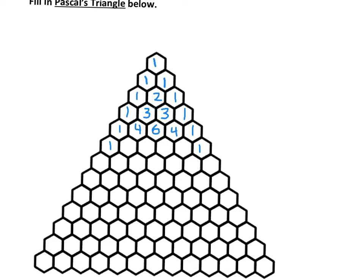1 plus 4 is 5. 4 plus 6 is 10. 6 plus 4 is 10. 4 plus 1 is 5. We won't fill in this whole thing, let's do a few more rows. 1 plus 5 makes 6. 5 plus 10 is 15. 10 plus 10 is 20. 10 plus 5 is 15. 5 plus 1 is 6.